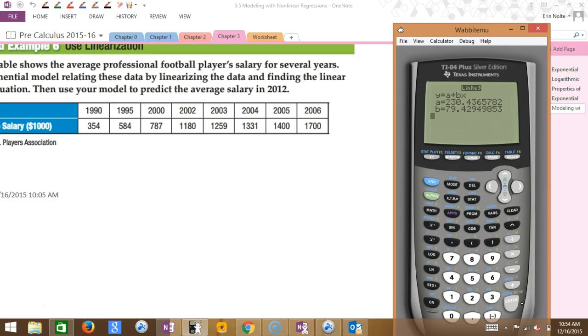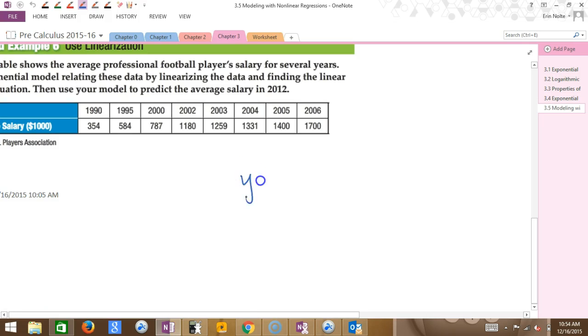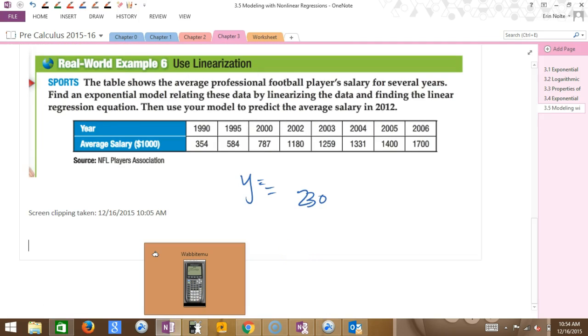So notice that the a plus bx is backwards than we normally write it. So the a is my y-intercept. So it would be y equals, sorry this is not working right now. What was it, 230? You guys write it down because mine is not working. Oh, there it goes. Perfect. That's perfectly written. Plus, what was the other one? What's my slope? 79 point 2x.